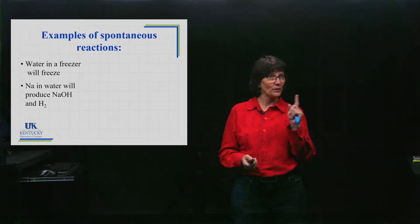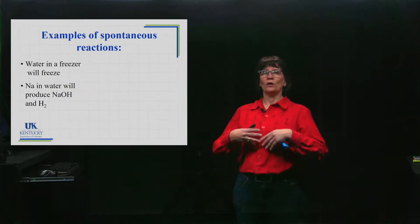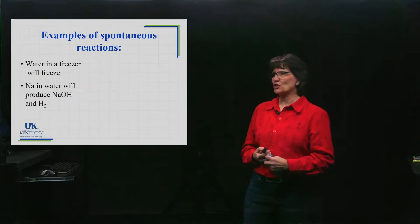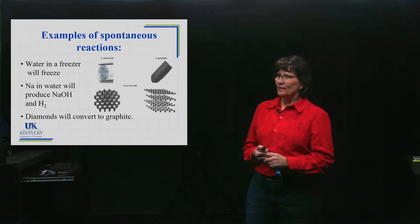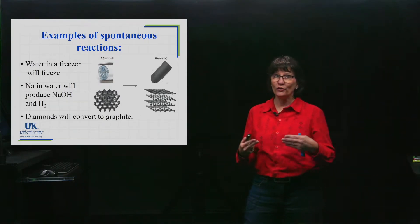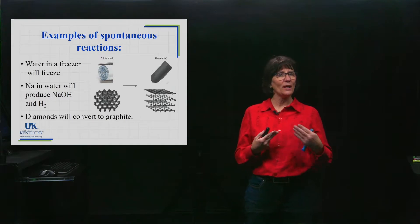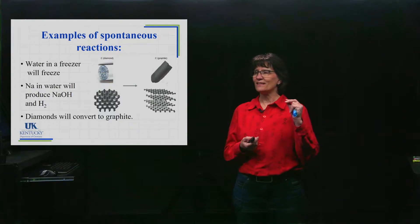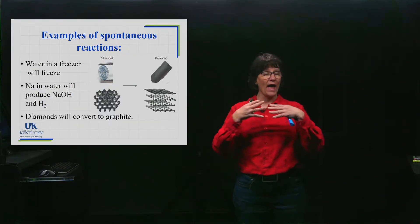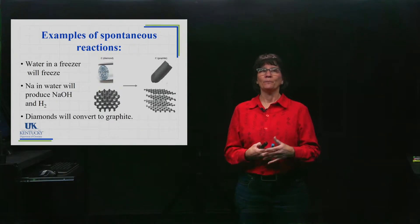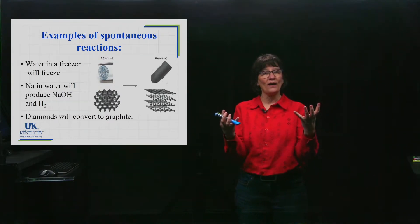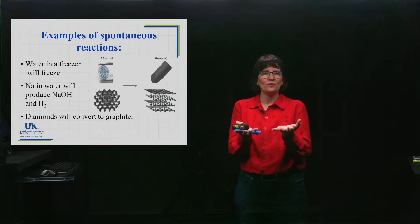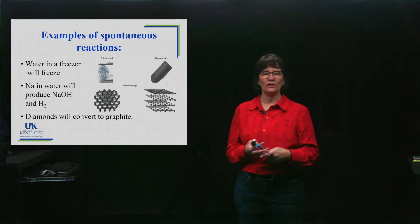If you take sodium metal and place it in water, it will convert the sodium to sodium hydroxide and release hydrogen gas — it's a pretty violent reaction. Another example: diamonds would spontaneously convert to graphite under our atmospheric pressure conditions. You can change the conditions and take graphite and, under high heat and pressure, convert it to diamonds, but once you take them out of those conditions and bring them to the surface, they will spontaneously turn into graphite.